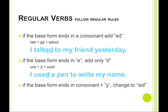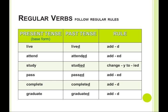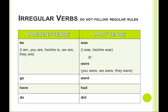If the base form ends in a consonant plus -y, change to -ied: 'carry' minus the -y plus -ied equals 'carried' — 'The man carried his child.' Here's a chart showing the present tense of many verbs, the past tense, and the rule we use to change those verbs.